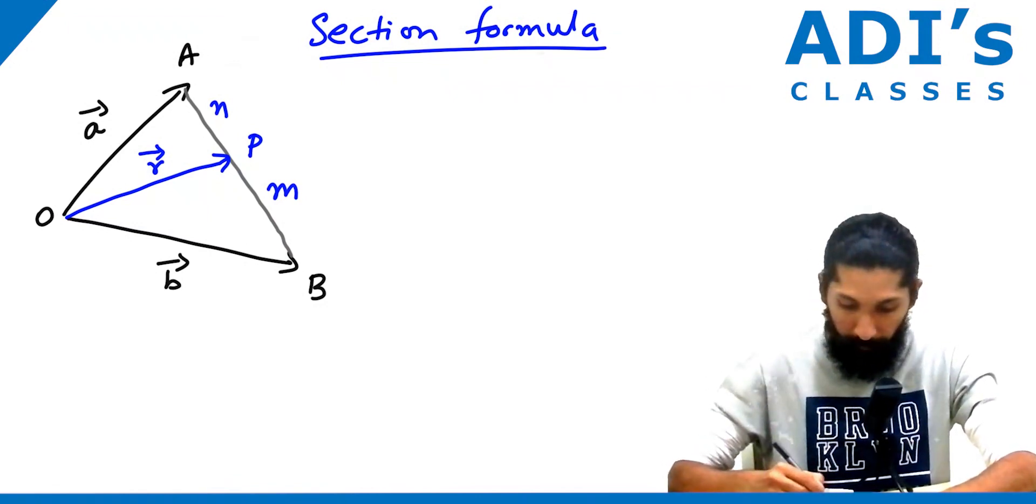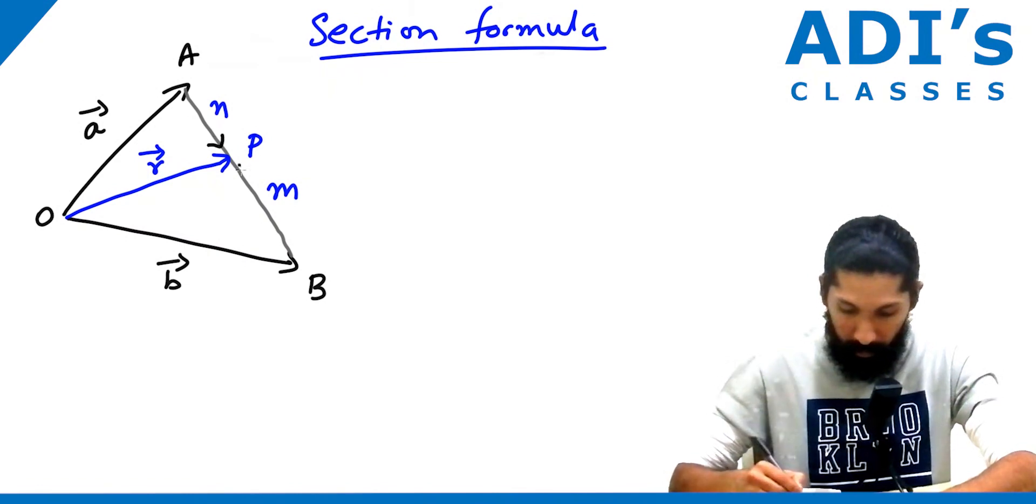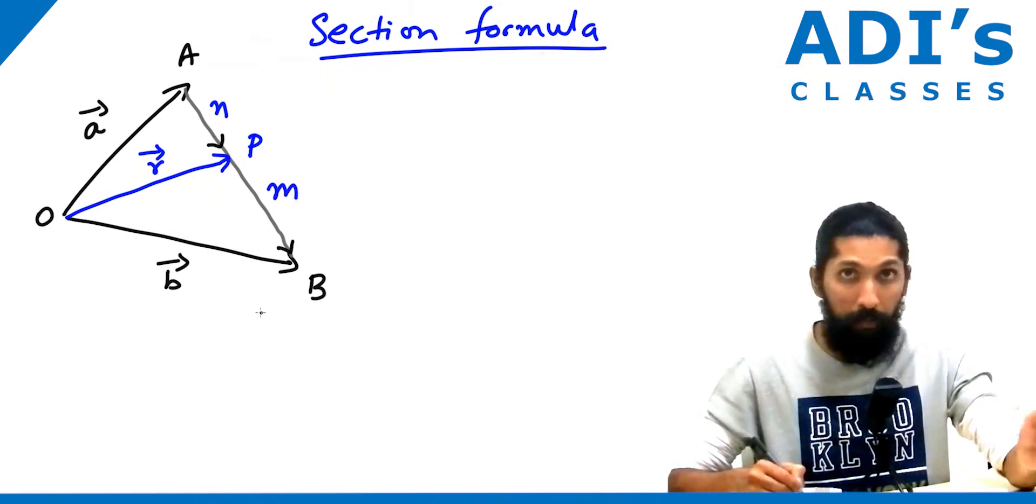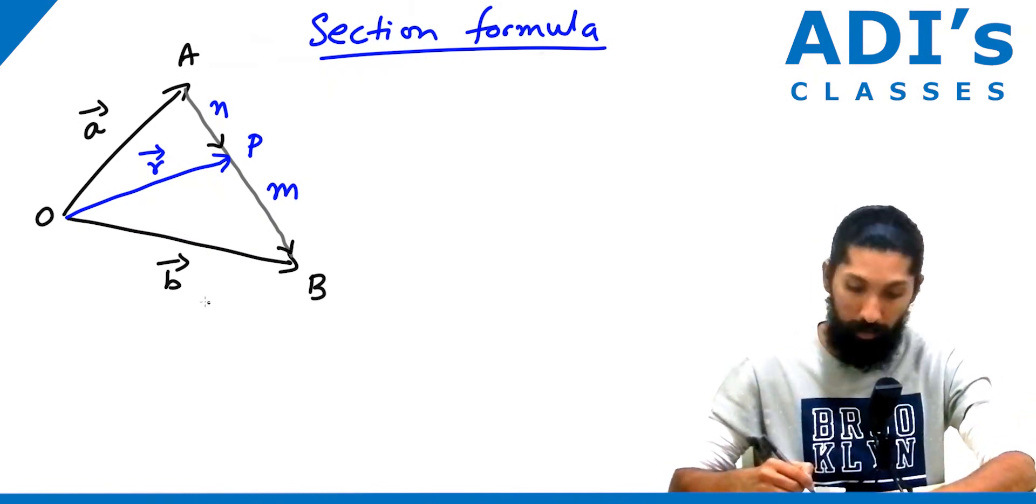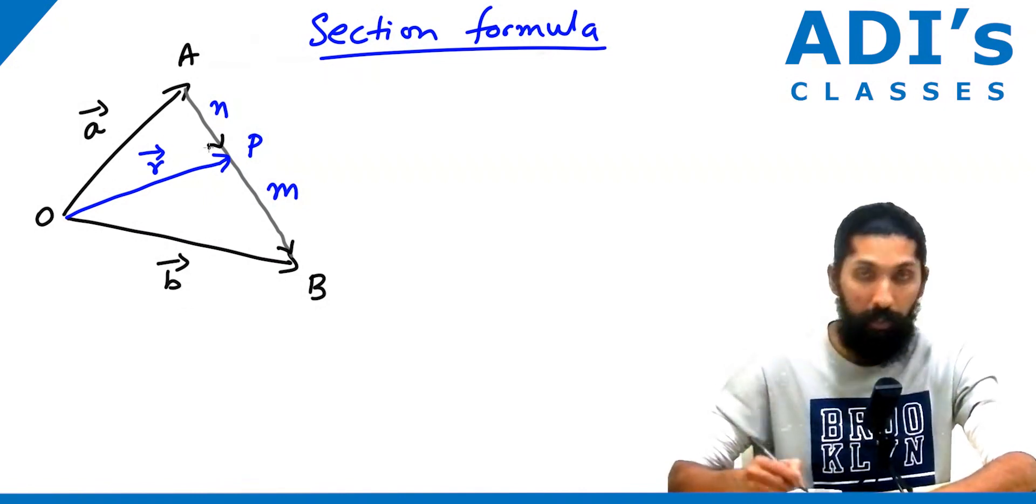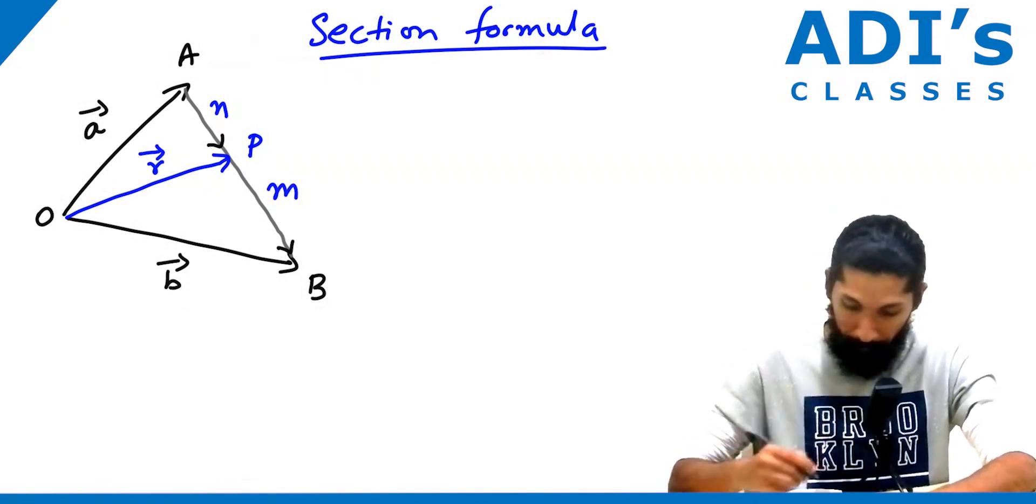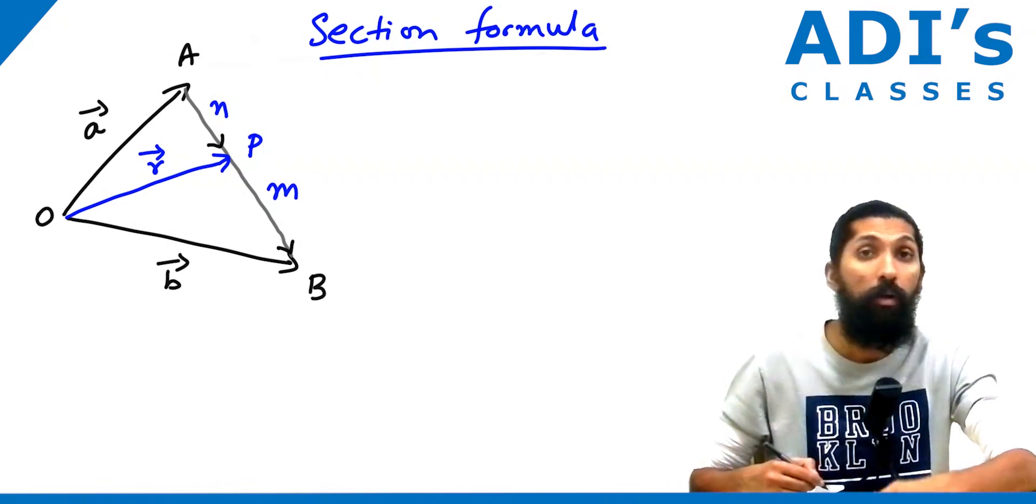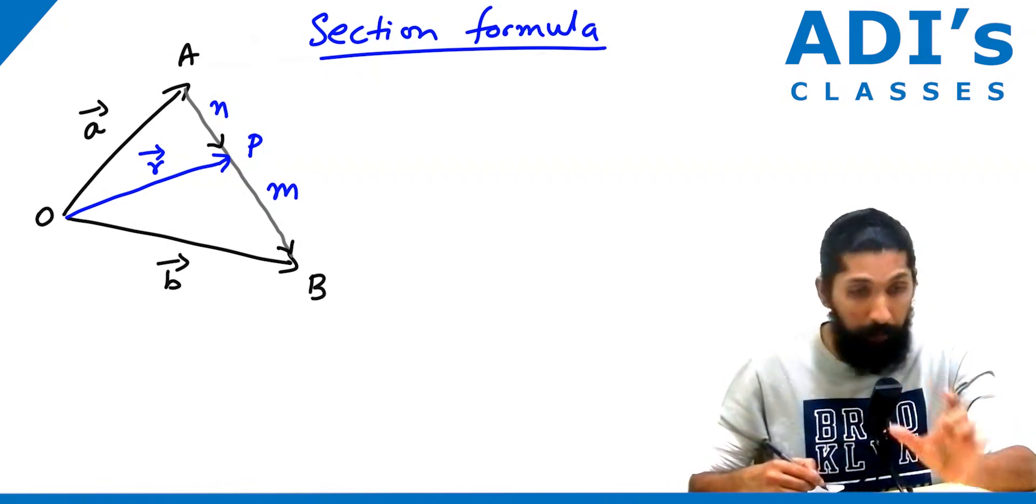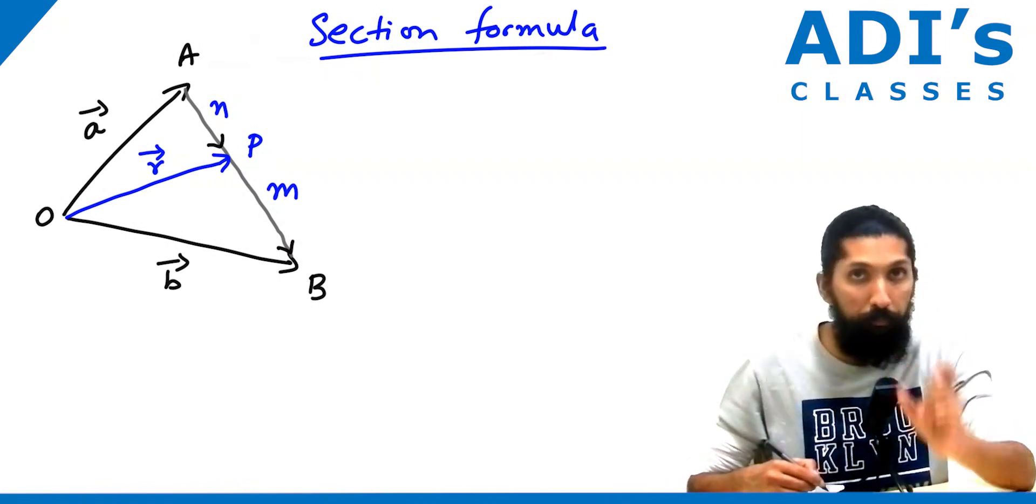Here the figure shows the vector AB. We're joining AB. Now AP and PB are collinear vectors. In this case, we'll try to calculate the AP distance and the PB distance.